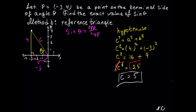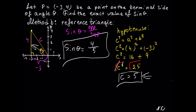So now we can solve for sine of theta, which is equal to the opposite side — 4 — over the hypotenuse — 5. So sine of theta is equal to 4 over 5.